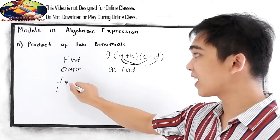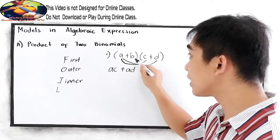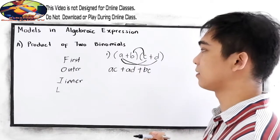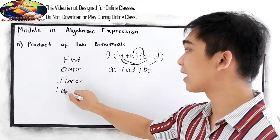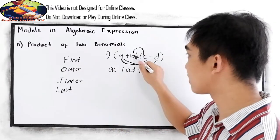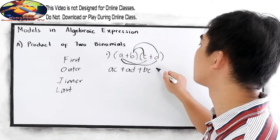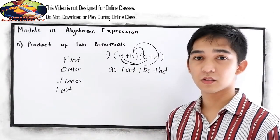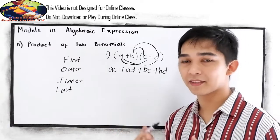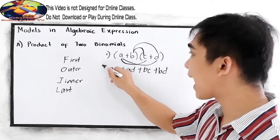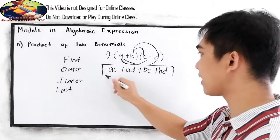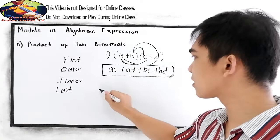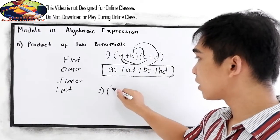Next, the Inner terms: b times c gives us plus bc. And the Last terms: b times d gives us plus bd. If we have like terms we can combine them, but in this case we don't have similar terms, so ac + ad + bc + bd is the answer.